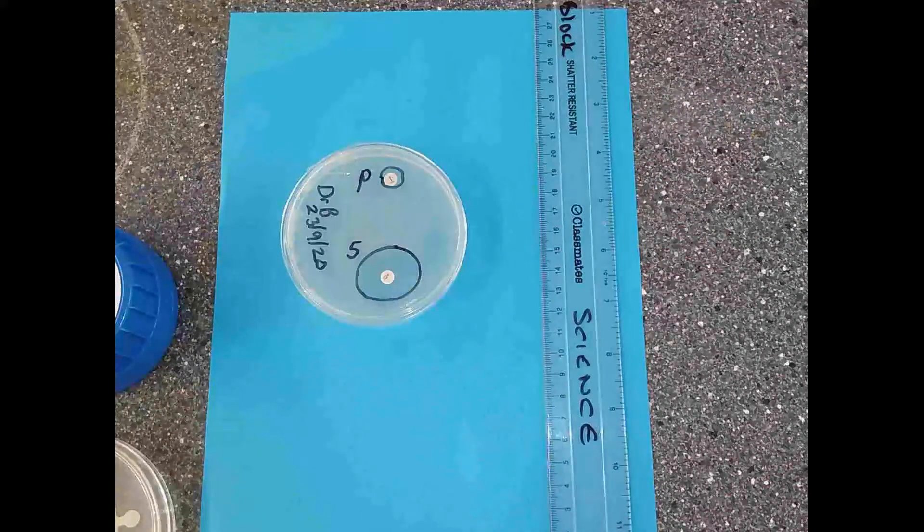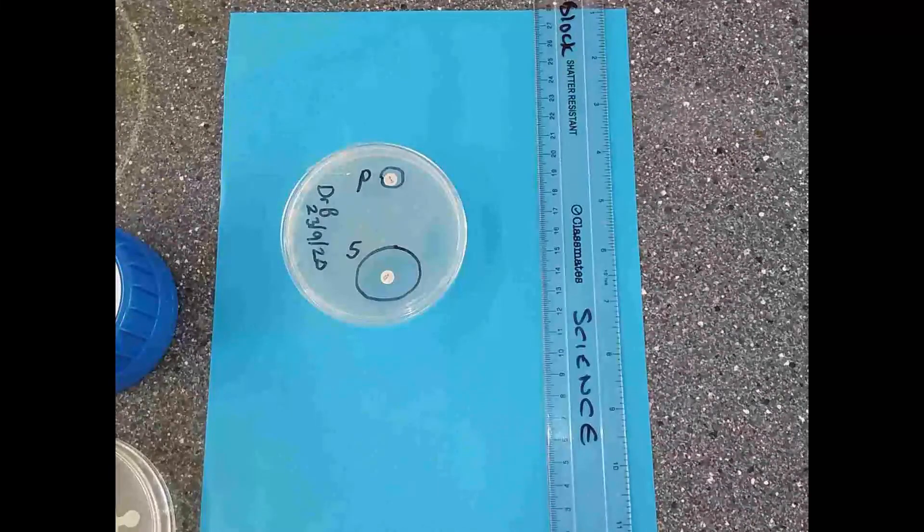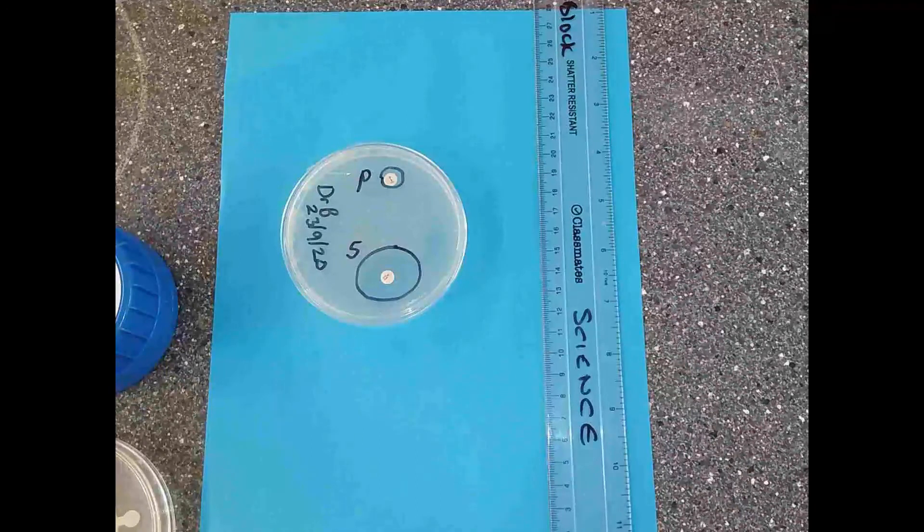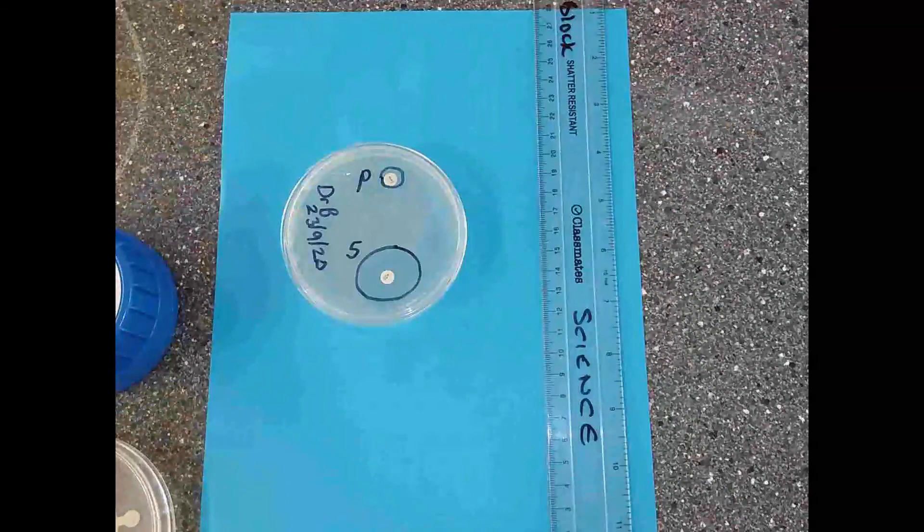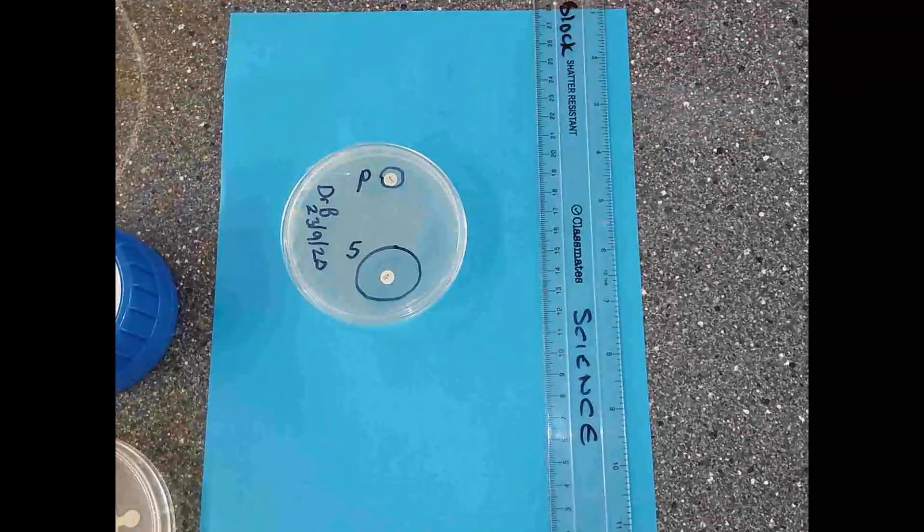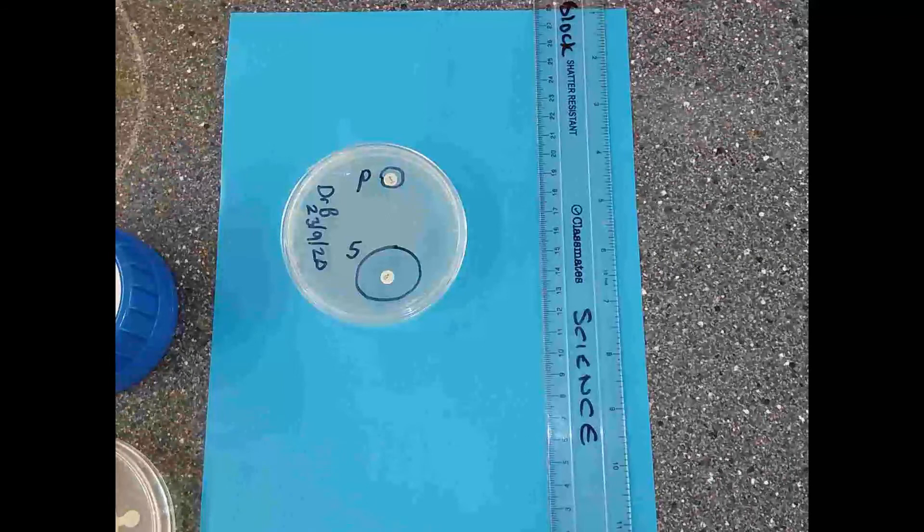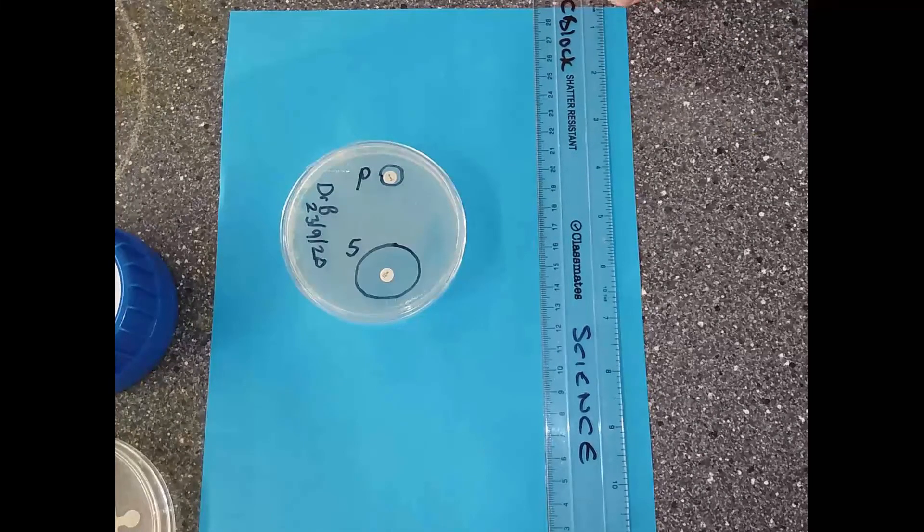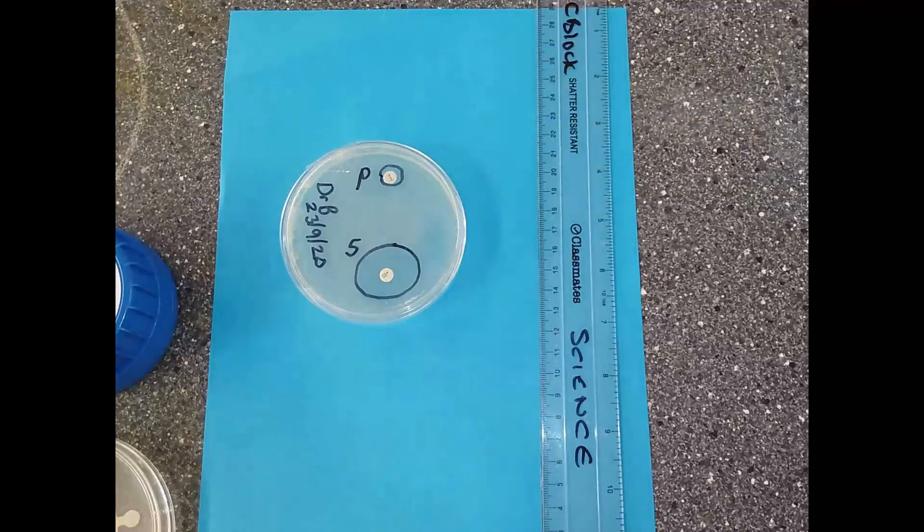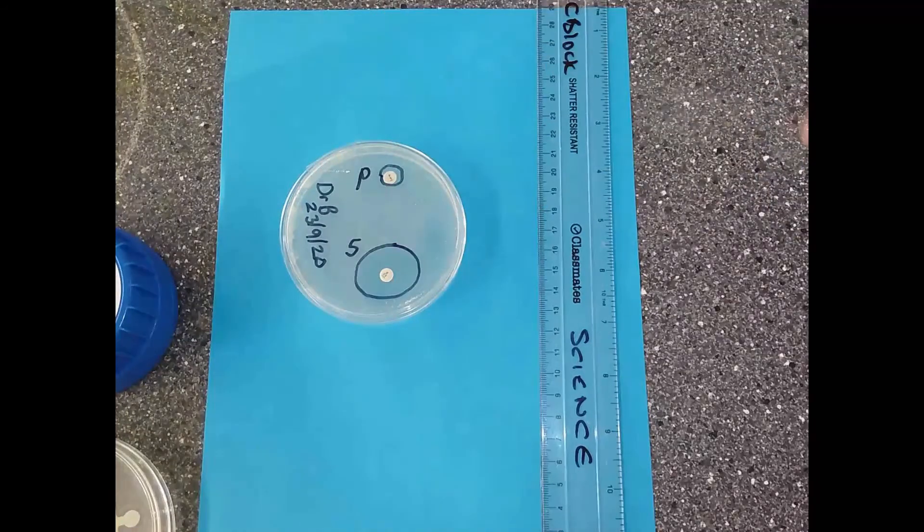Observing that, which is the most effective antibiotic for E. coli? Streptomycin. Why do you say that? Because there's more clear space around it. Yeah, there's a larger clear space. We can do observations like that, but because we're scientists, we need to measure the zone within which the bacteria have died. We can't count the bacteria because there are literally millions of bacteria.